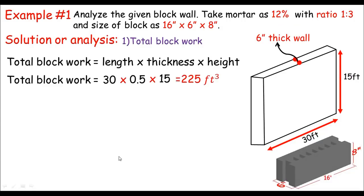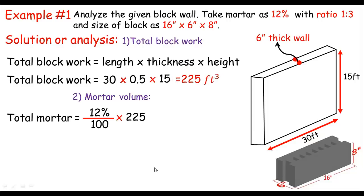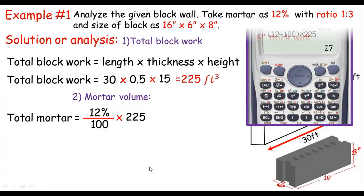Now we find the mortar volume, which is 12%. So mortar = (12/100) × 225 cubic feet. Doing the math, we get 27 CFT as the total mortar volume.